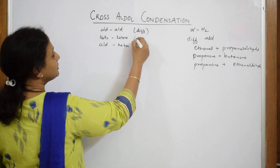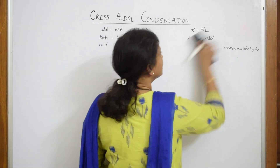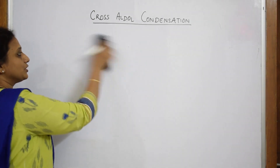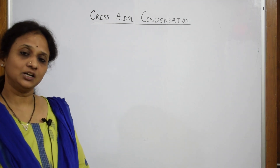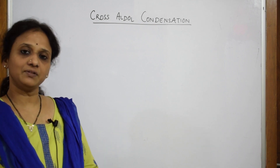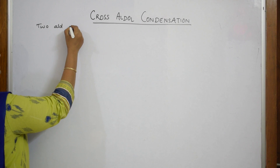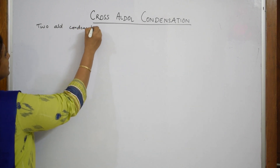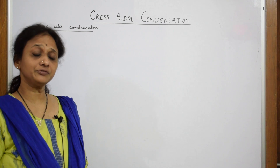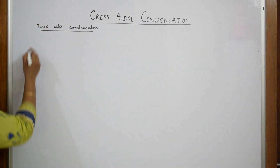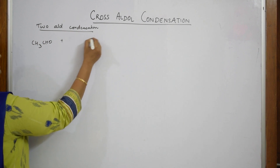Remember, if you write the same compound it becomes a regular aldol condensation, not cross aldol — they must be different. Now, for cross aldol condensation, you need two different molecules. I'm going to start with a two-different-aldehyde combination, and we'll do the aldehyde-ketone case afterwards. As with aldol, you require the presence of a base. The base helps in the formation of the enolate ion and elimination of the water molecule.